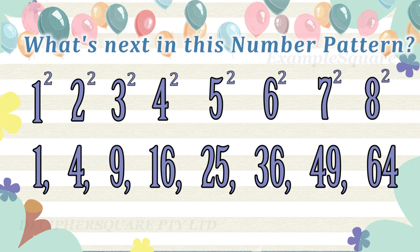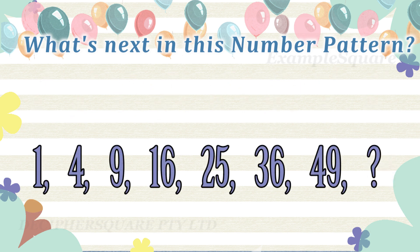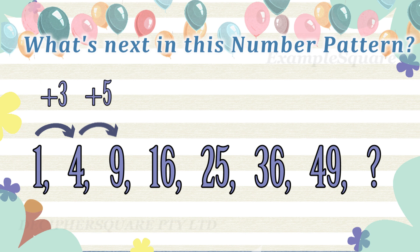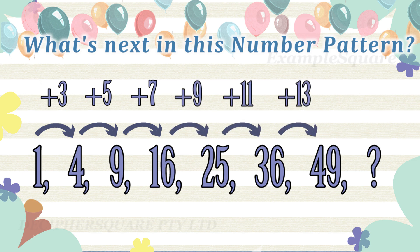Another way to approach this number pattern is to observe the difference between the consecutive numbers. The difference between the first and second number is three, the difference between the second and third number is five, and the difference between the next two consecutive numbers is seven. So the difference between consecutive numbers is not constant — it is itself increasing in a pattern, where each difference is the next odd number.